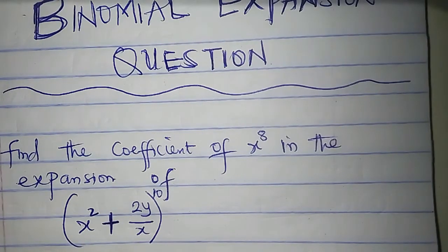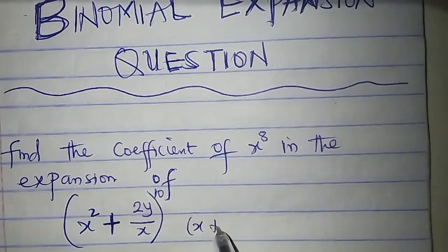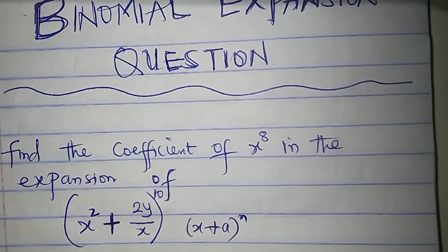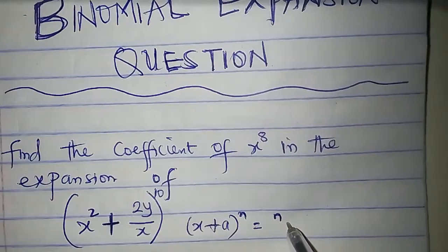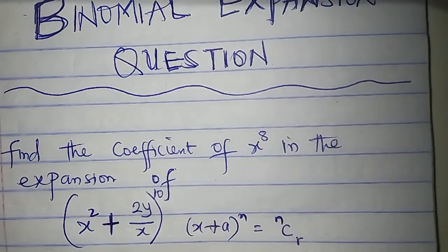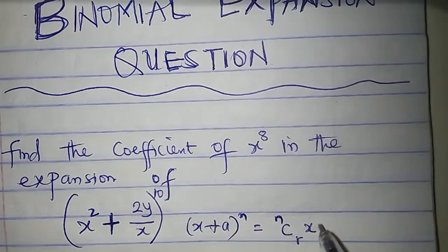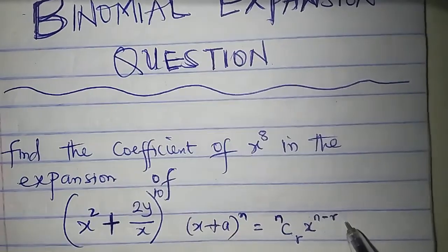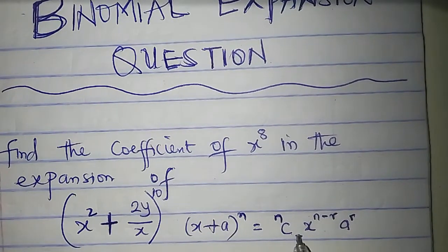The general term of a binomial expansion — let's say we want to expand (x plus a) raised to the power n — the general term is: n combination r times x to the power of (n minus r) times a to the power of r. This is the general term.